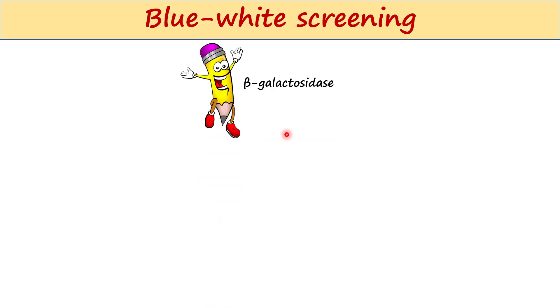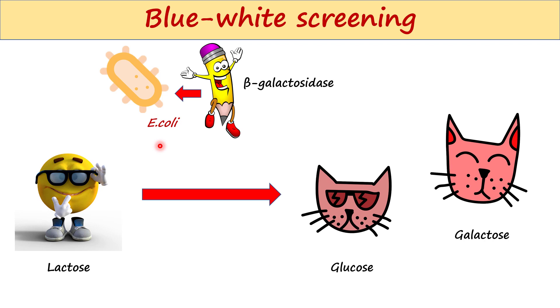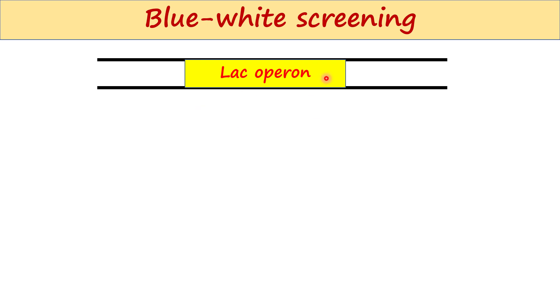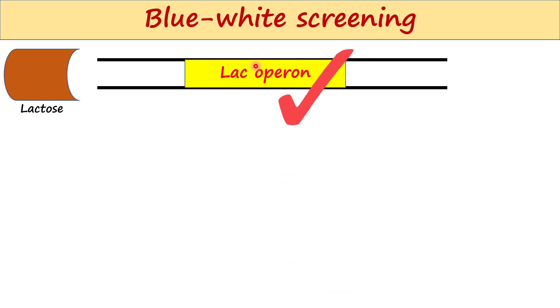Blue-white screening is a selection technique based on the activity of beta-galactosidase. Beta-galactosidase is an enzyme found in E. coli bacteria. This enzyme cleaves lactose into glucose and galactose. We know that bacteria have a special operon called the lac operon. If lactose is present in the media, the lac operon is on.